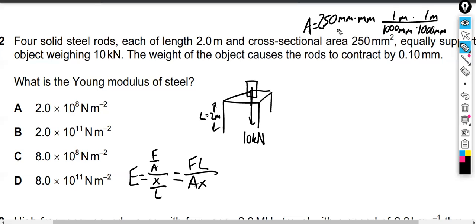We convert square millimeters into square meters by dividing by a million — there are a million square millimeters in one square meter. 10 to the three times 10 to the three is 10 to the six. So 250 divided by a million is 2.5 times 10 to the negative four. The area equals 2.5 times 10 to the negative four square meters — now we're in the correct units, with force in newtons and area in square meters.